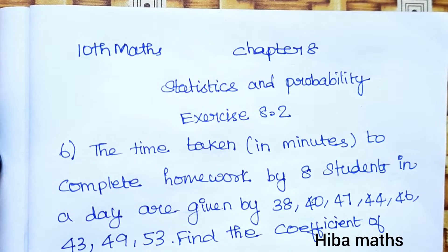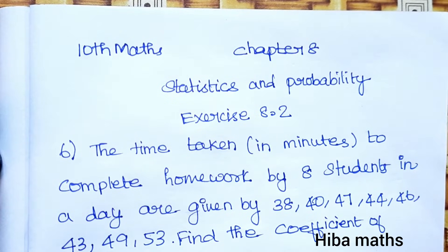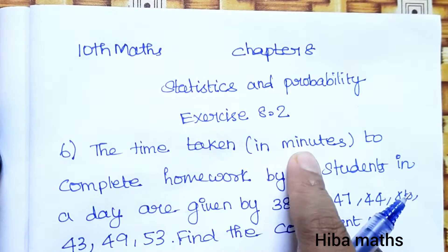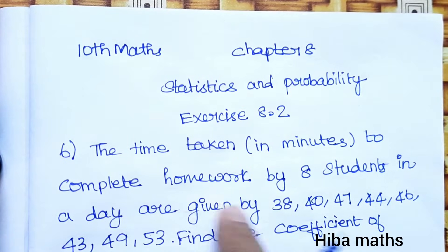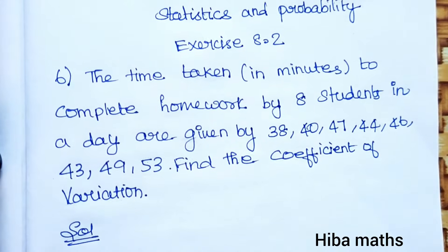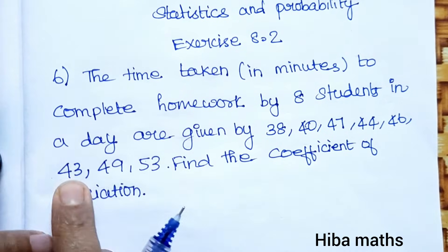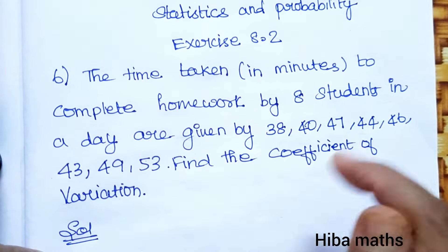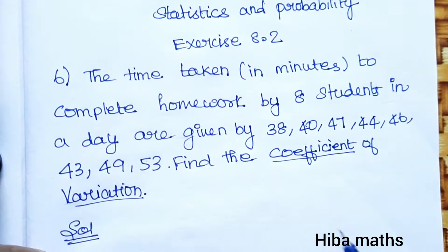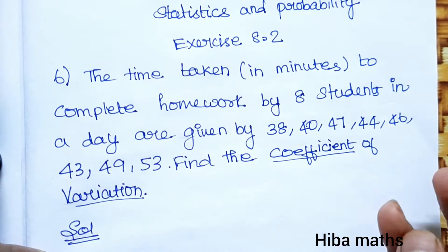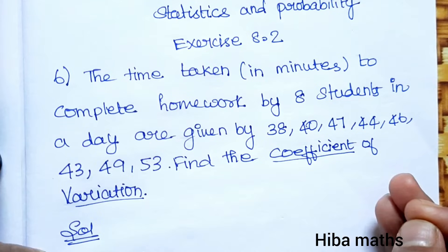Hello students, welcome to Hiva Max 10 Standard, Chapter 8: Statistics and Probability, Exercise 8.2, sixth question. The time taken in minutes to complete homework by 8 students in a day are given by: 38, 40, 47, 44, 46, 43, 49, 53. Find the coefficient of variation — so we need the mean, standard deviation, and then the coefficient of variation.